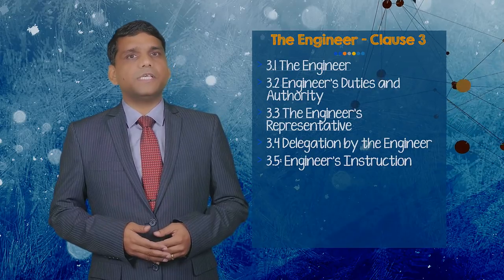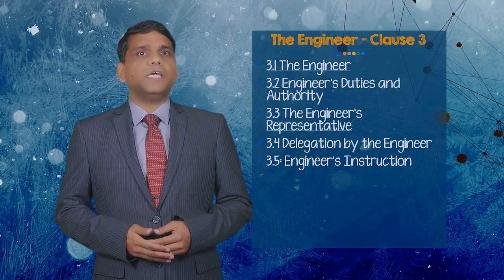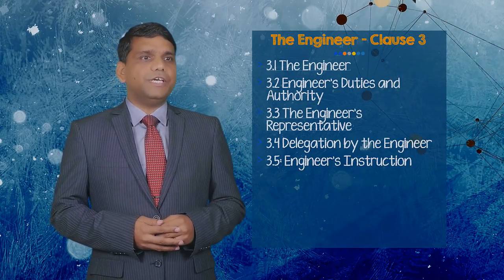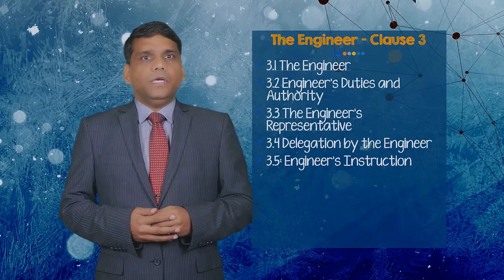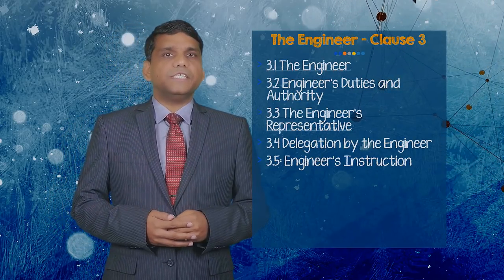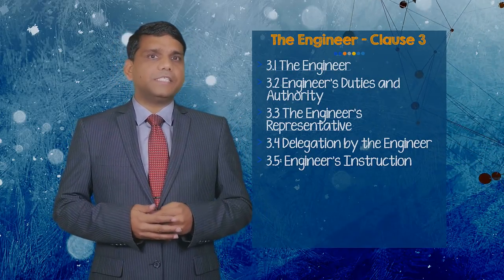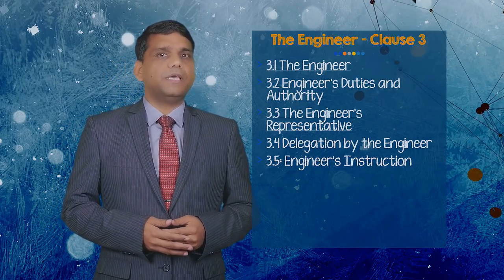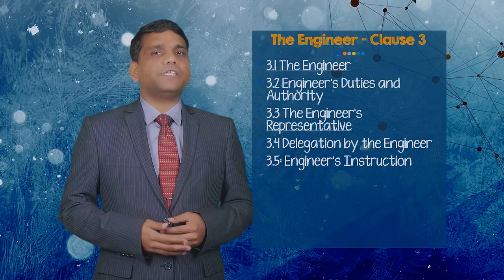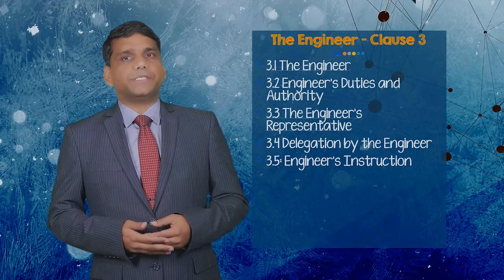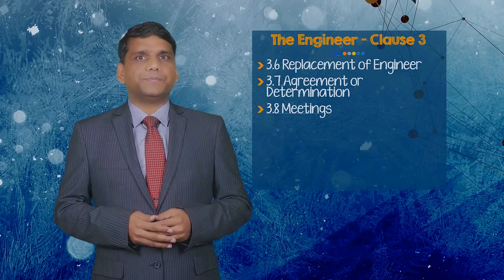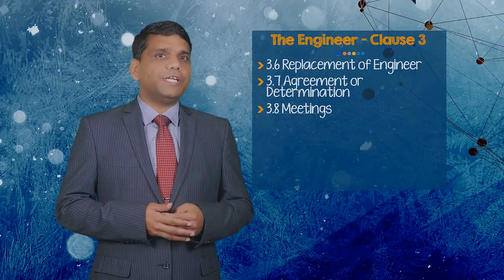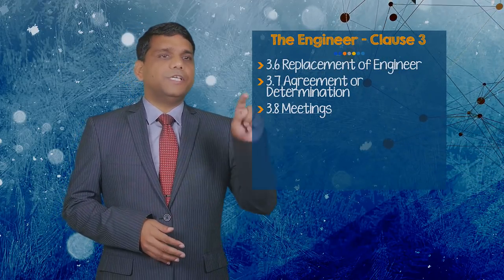The number of sub-clauses increased from 5 to 8. These additional clauses include sub-clause 3.1, the engineer, and sub-clause 3.3, the engineer's representative. Sub-clause 3.5, engineer's instructions, requires that if the contractor believes that an instruction by the engineer is a variation, he has to give notice immediately before its compliance. However, this sub-clause is silent on whether the contractor claims a variation later without a notice.